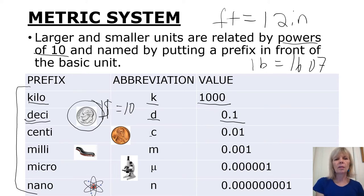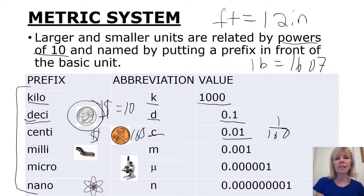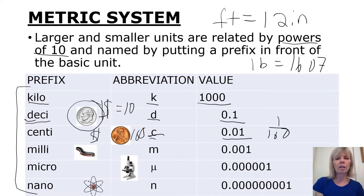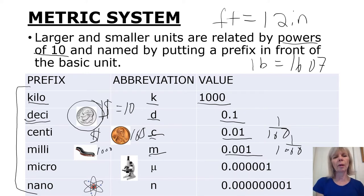Centi, abbreviated with a C, is one one-hundredth of your basic unit. Going back to money, you can think about a dollar containing 100 cents, so there are a hundred cents in a dollar. Milli, abbreviated with a little m, is one one-thousandth of your basic unit. I like to think of a millipede — this creature with a thousand legs. So there are a thousand millimeters in a meter.